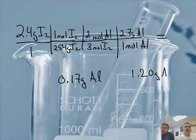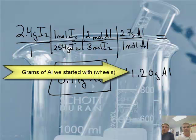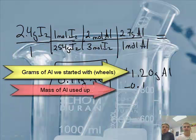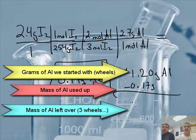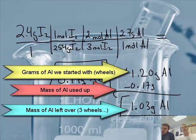1.20 actually. We started with 1.20 grams of Al. But we only used up, that's what we started with, we used up the 0.17 of that. So what we'll do is we'll subtract 0.17 grams of Al. And that of course is 1.03 grams of Al. That's how much is left over. It did not react. So most of the aluminum still remains. We used up only a scant amount.